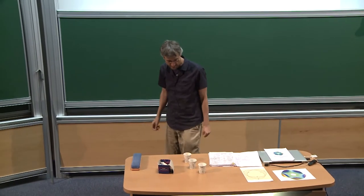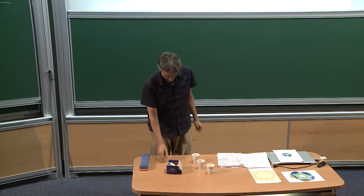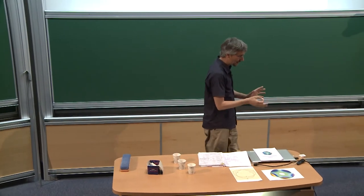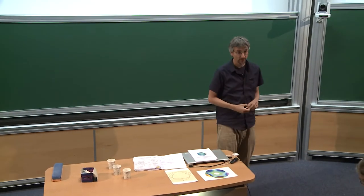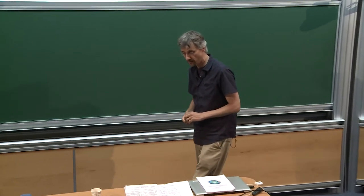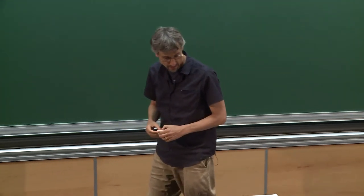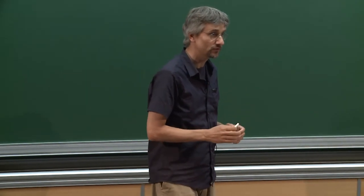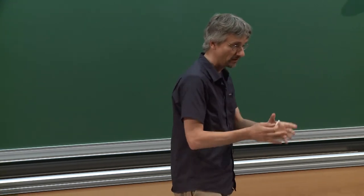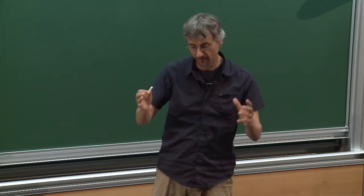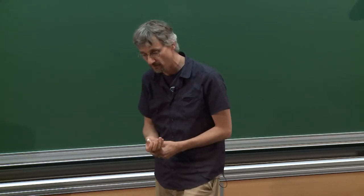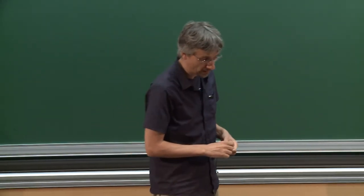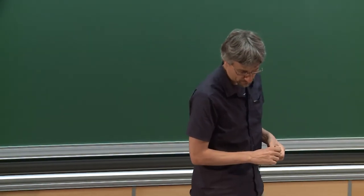It's a great pleasure to be speaking here. I want to talk about the simple case of how to define the Stokes data of a linear connection on a curve. This is probably a quite trivial thing for most people here, but lots of people think about the same objects in various different ways, and I want to talk about how to pass between the different perspectives.